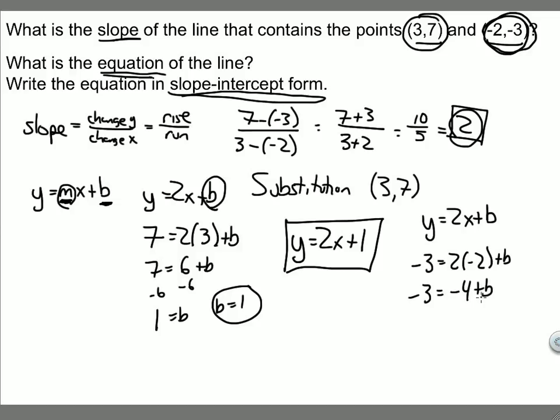Negative 3 equals 2 times negative 2 plus b. Negative 3 equals 2 times negative 2 is negative 4 plus b. Add 4 to both sides. Negative 3 plus 4 is 1. Negative 4 plus 4 is 0, equals b. So b equals 1.